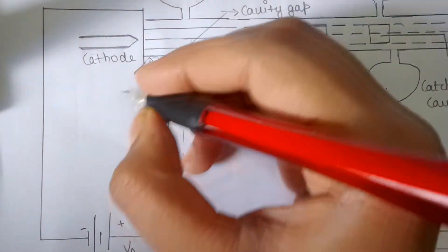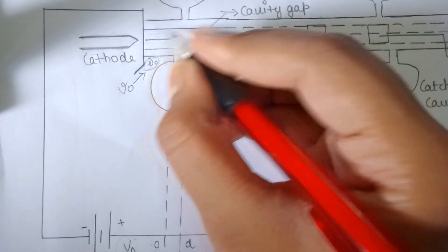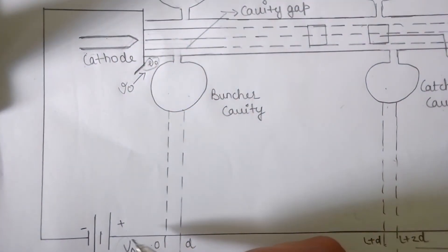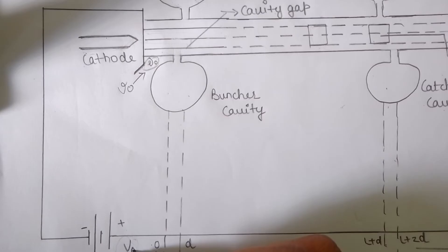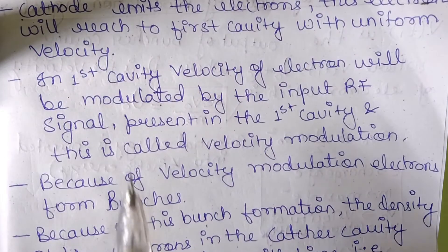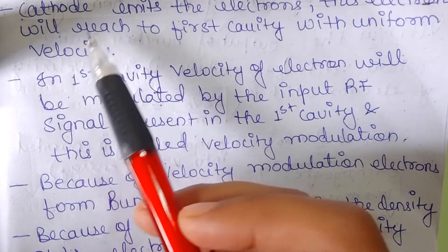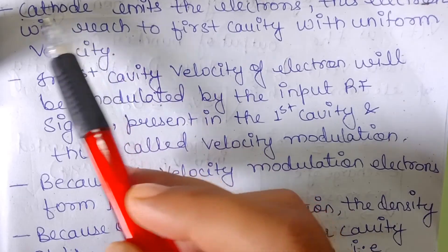This small voltage V0 here represents the velocity of the uniform electrons and this V0 represents the cathode voltage. So, please don't get confused with this. Now, let's know the operation of the cavity klystron, two cavity klystron.